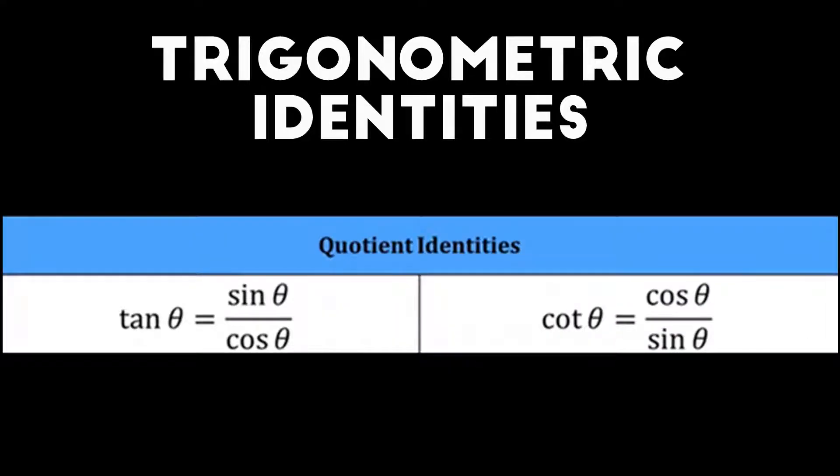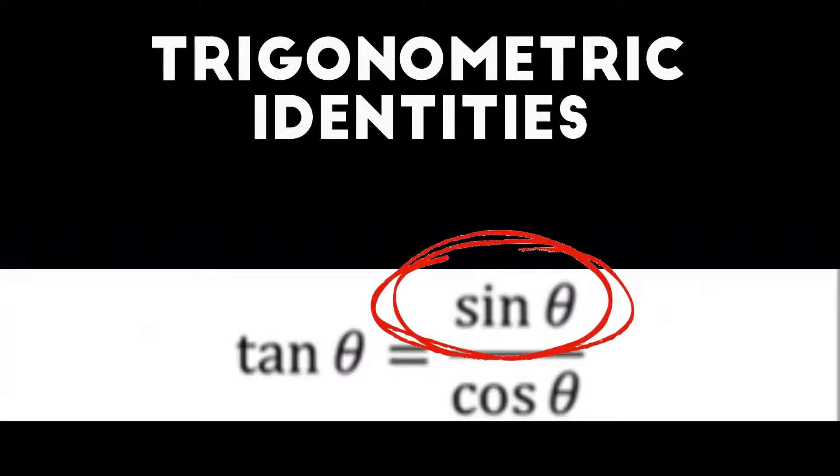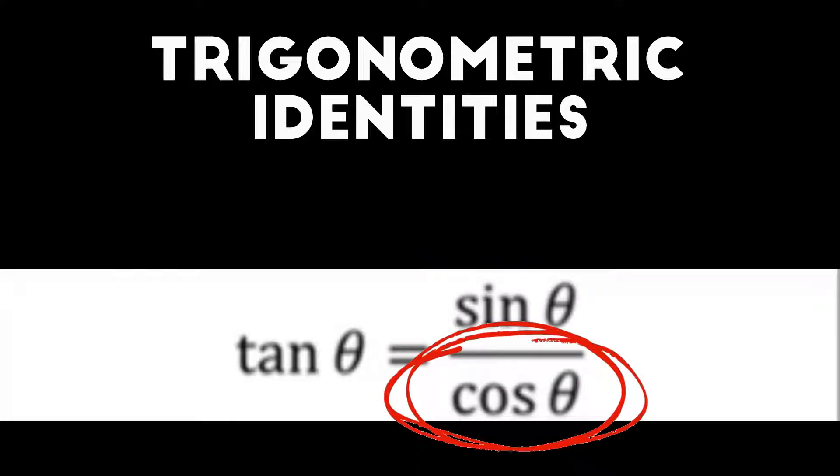Next is quotient identities. These are identities that make use of division from the word quotient. Basically, you can find the functions just by dividing the other equations. Such as tangent theta is equal to sine theta over cosine theta. If you were to find sine theta, just multiply tangent theta by cosine theta. If you wanted to find cosine theta, it would be sine theta divided by tangent theta. It's as easy as transposing the values.